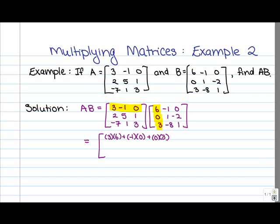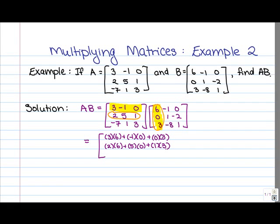That gives us the entry in position 1, 1. To get the next entry in position 2, 1, that means the second row of A and still the first column of B. What we've got is 2 times 6, plus 5 times 0, plus 1 times 3. Next, to get entry 3, 1, we have the third row of A and the first column of B: negative 7 times 6, plus 1 times 0, plus 3 times 3.